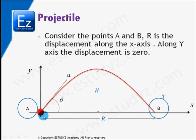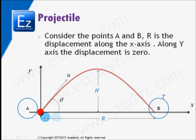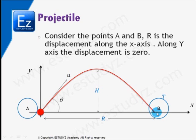The projectile starts from point A and ends up at point B. It is projected with initial velocity u at an angle theta with the horizontal or x-axis. The displacement along the x-axis is the range of the projectile, which is AB. H is the maximum height reached by the projectile. The displacement along the y-axis is 0, because the projectile starts from the origin on the x-axis and ends at B, which is also on the x-axis. So the overall displacement along the y-axis is 0.